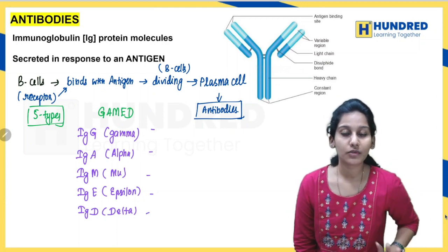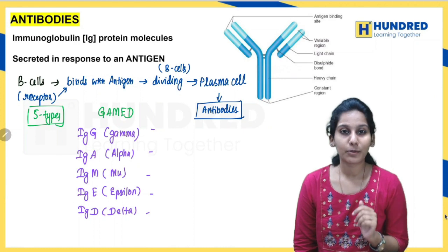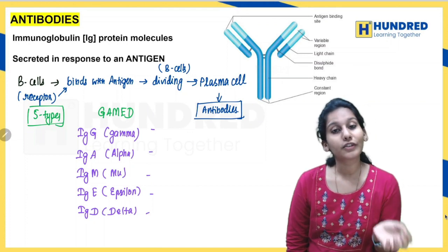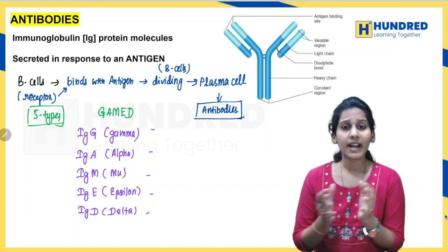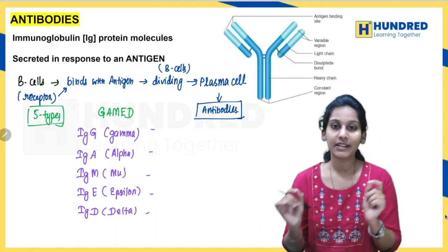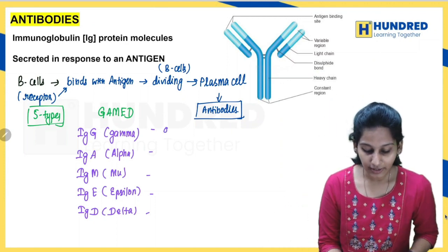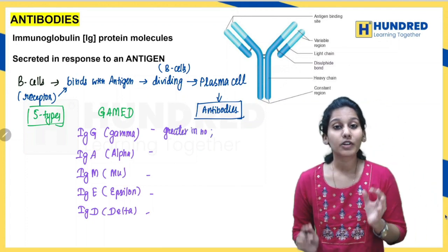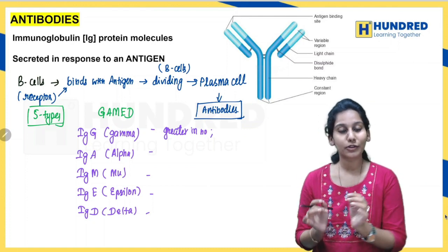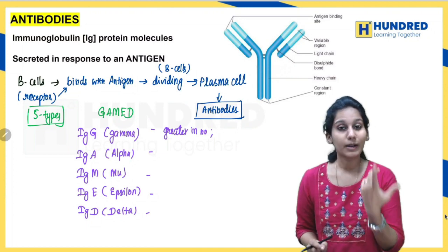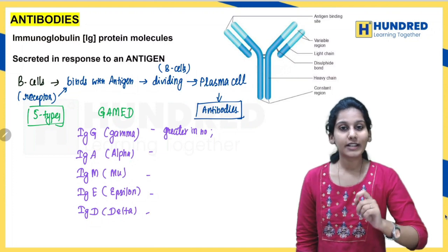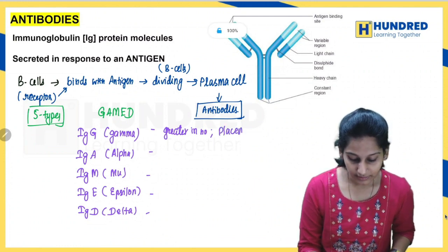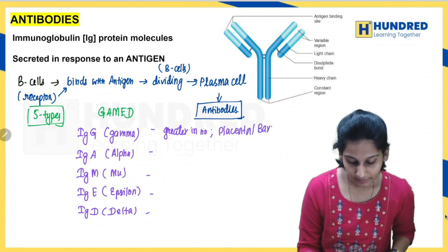Now the antibody functions in short. First, IgG — the gamma antibody. IgG is the most abundant antibody. It is also the one antibody which can cross the placenta, providing protection to the fetus. So IgG is the antibody that crosses the placental barrier.